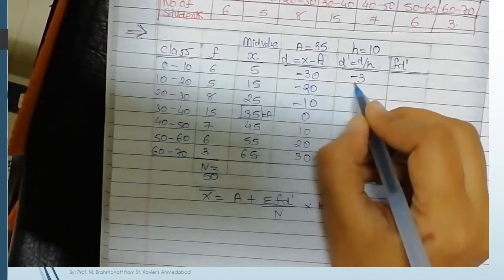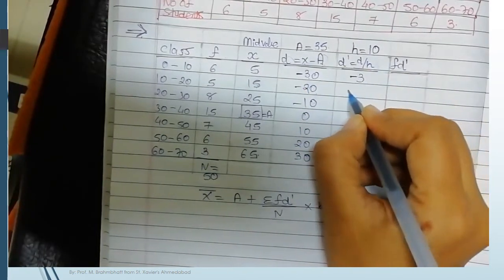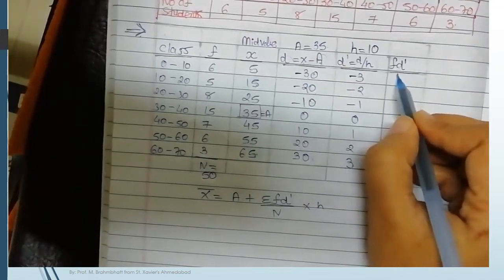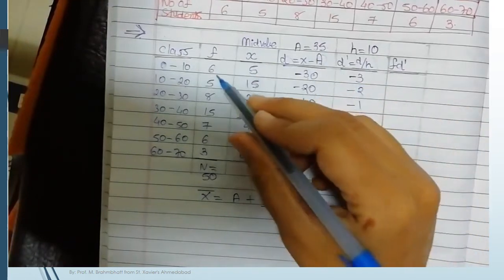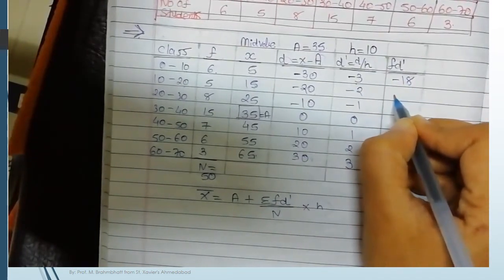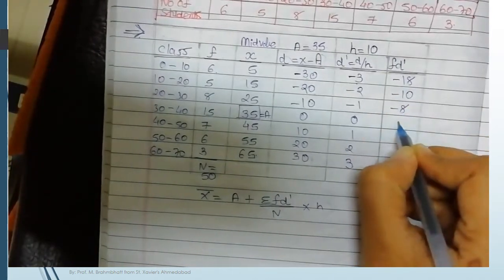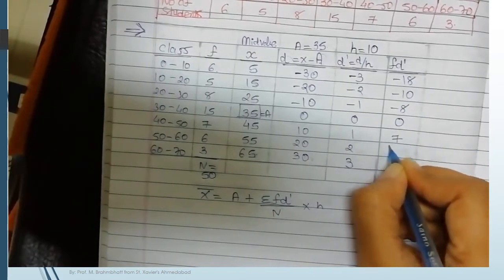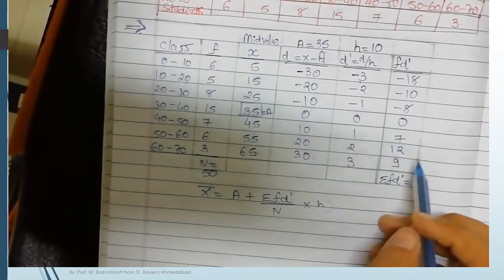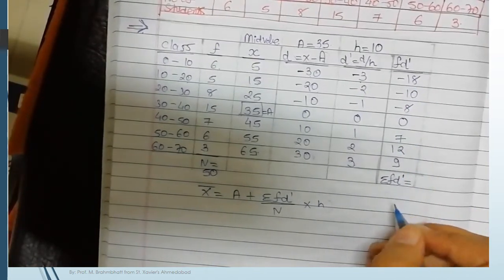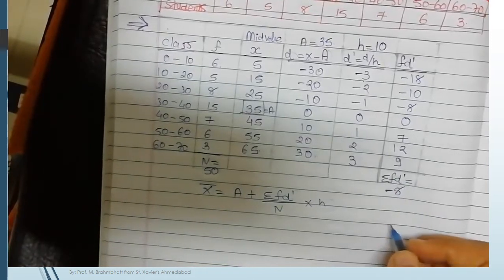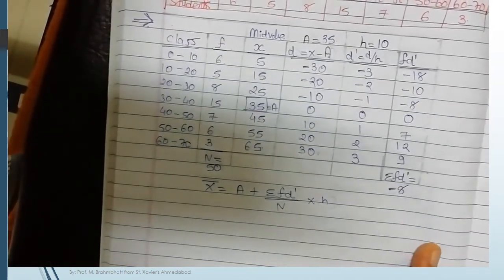Dividing each d by 10, the d-dash values are: minus 3, minus 2, minus 1, 0, 1, 2, and 3. Now compute f·d-dash: 6 times minus 3 is minus 18; 5 times minus 2 is minus 10; minus 8; 0; 7; 12; and 9. The total sigma f·d-dash equals minus 8.